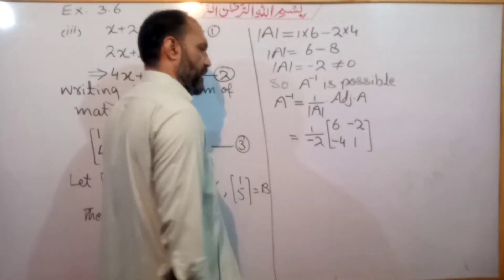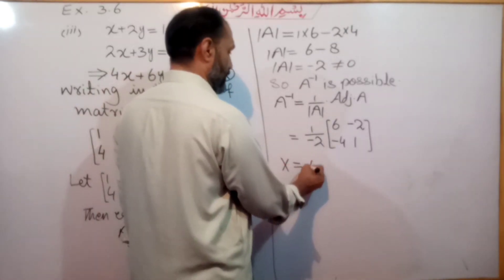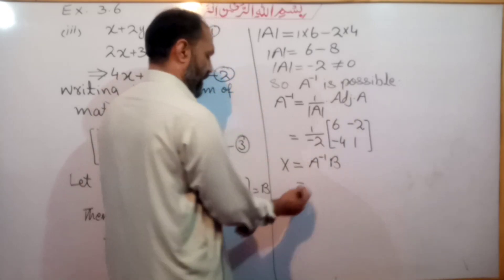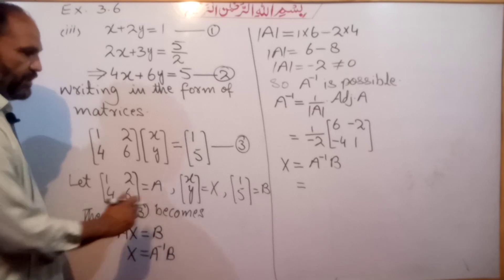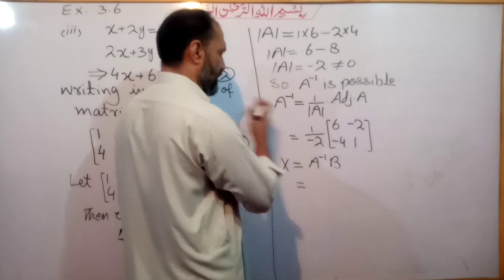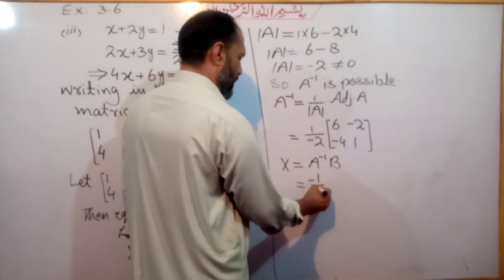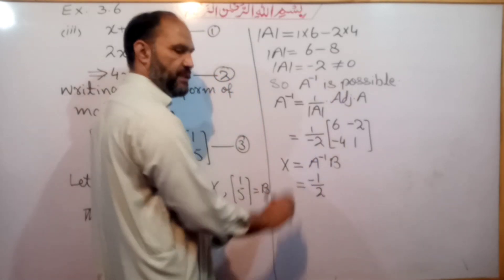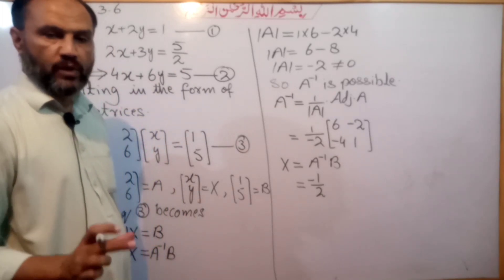Now X = A inverse B. We put A inverse in place and multiply by the B matrix, which is [1, 5]. We multiply minus 1 over 2 by the result. Since we have a fraction 1 over 2, we bring the negative sign and keep the denominator as 2.